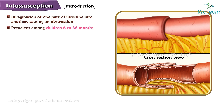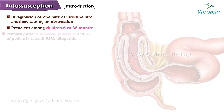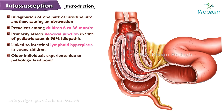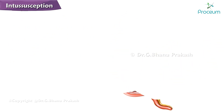It is notably prevalent among children aged 6 to 36 months and primarily affects the ileocecal junction in over 90% of pediatric cases, with 95% being idiopathic. While often linked to intestinal lymphoid hyperplasia in young children, older individuals may experience intussusception due to a pathologic lead point.